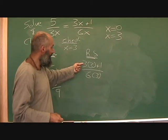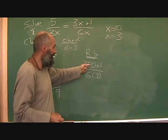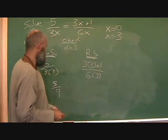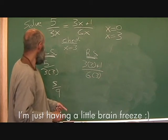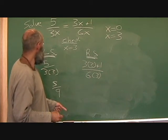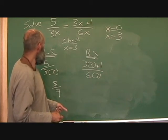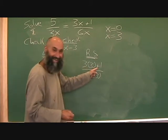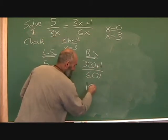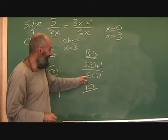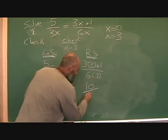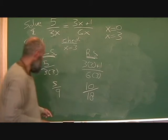Over here, we've got three times three is nine. Three times three is nine plus one is ten. And six times three is eighteen.